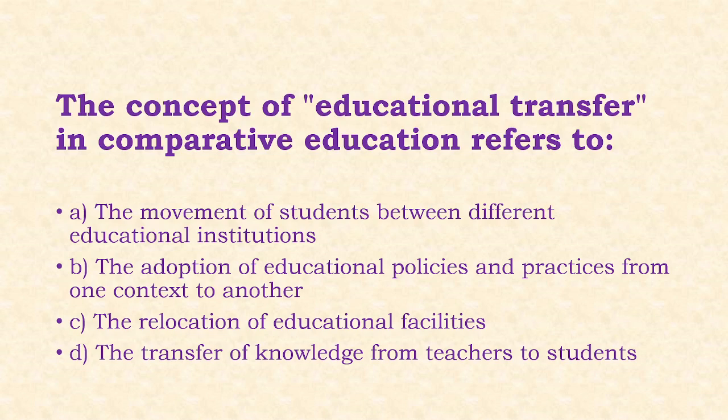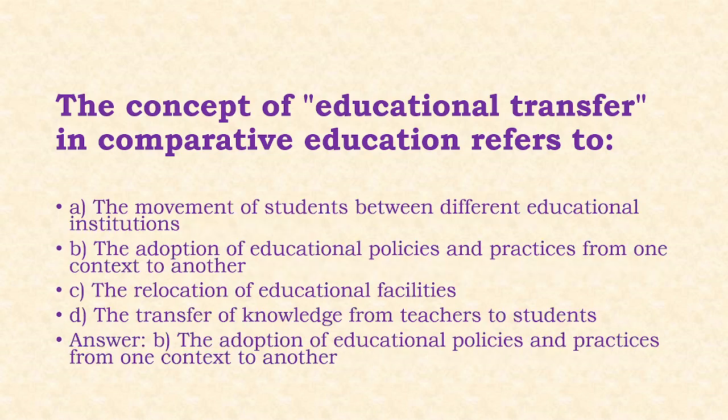Next: The concept of educational transfer in comparative education refers to the adoption of educational policies and practices from one context to another. Options: movement of students between different educational institutions; adoption of educational policies and practices from one context to another; relocation of educational facilities; transfer of knowledge from teacher to students. The answer is option B.